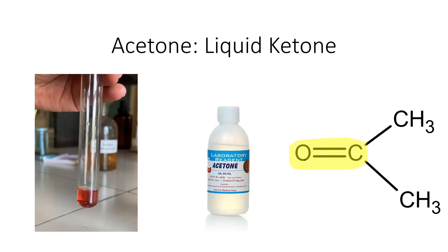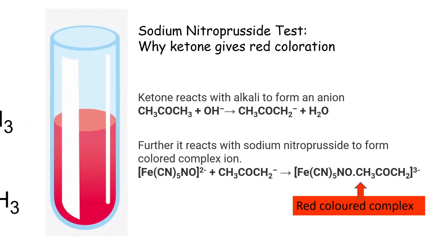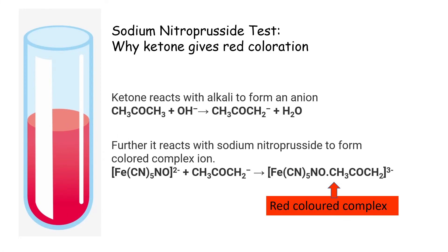Sodium nitroprusside test is generally used for liquid ketones. The question is, why does ketone give red coloration? Ketone reacts with alkali, meaning NaOH, to form an anion. This anion further reacts with sodium nitroprusside to form a red color complex, as shown.